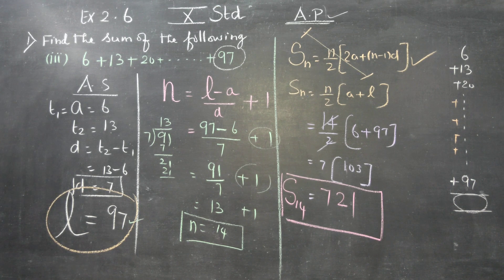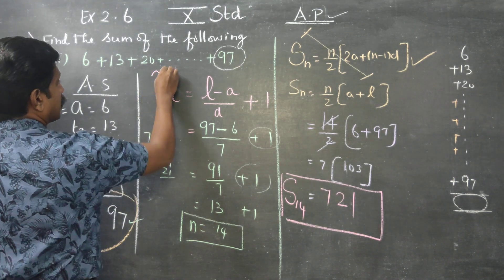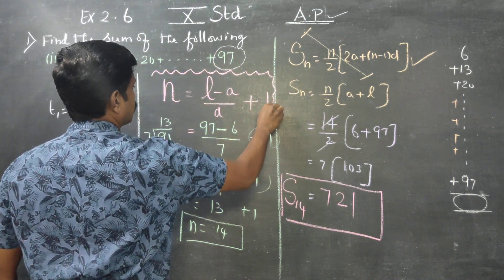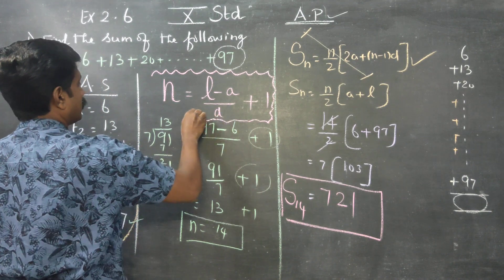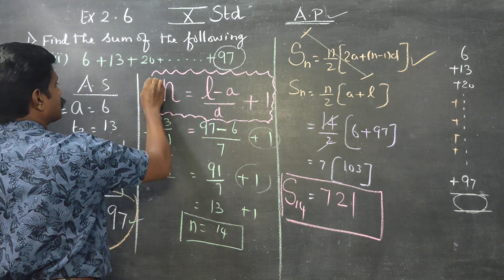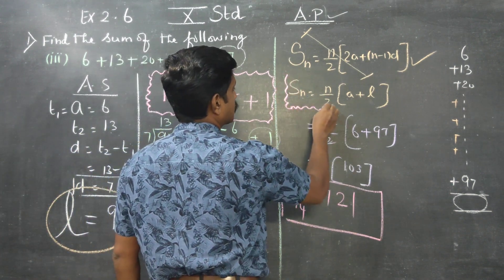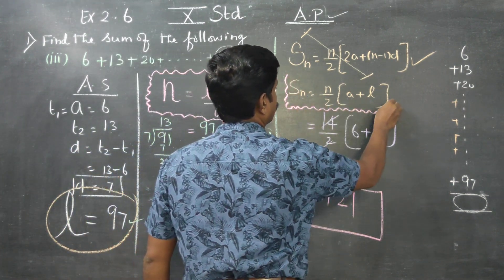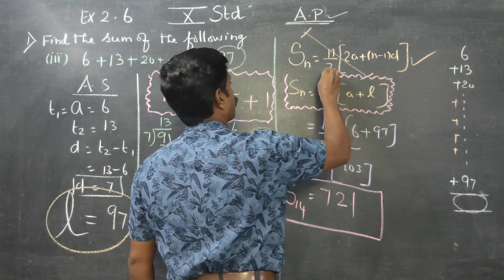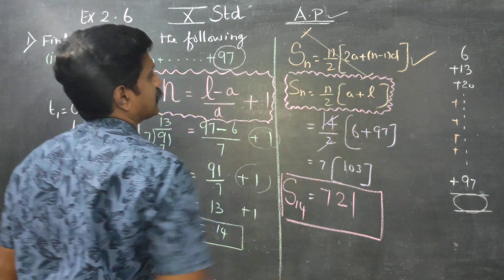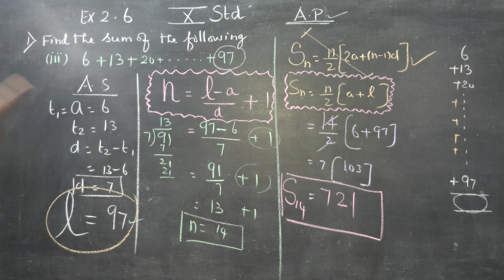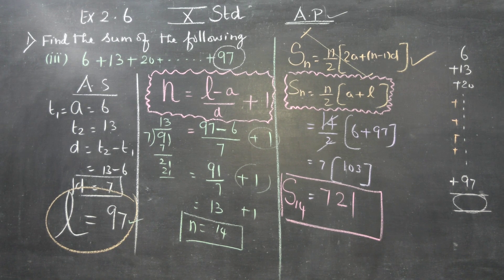The first formula is n = (l minus a) by d plus 1, which can be used to find the value of n. Then Sn is equal to n by 2 into (a plus l), where l is the last term.